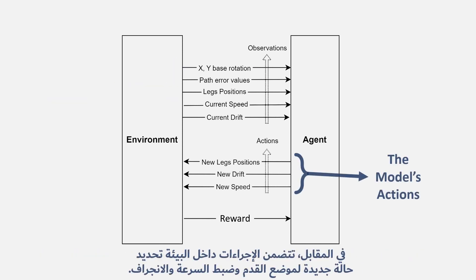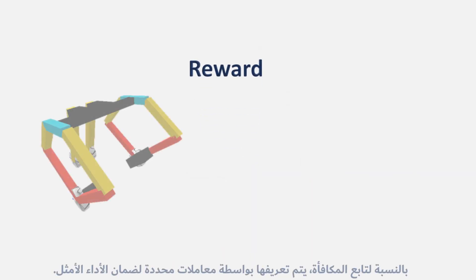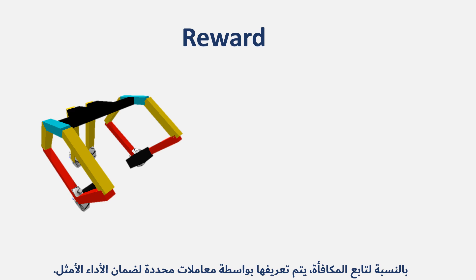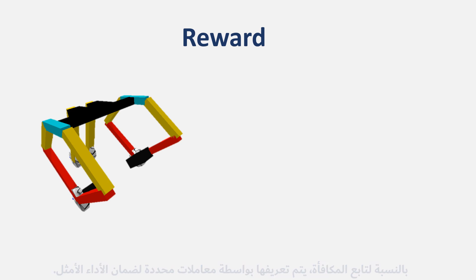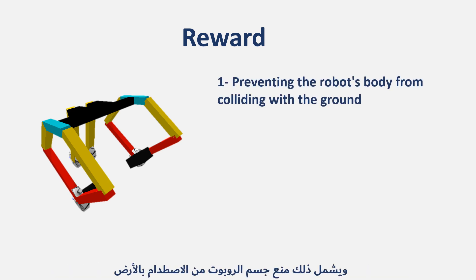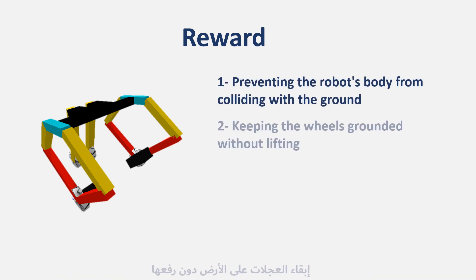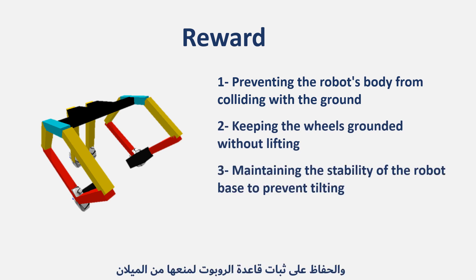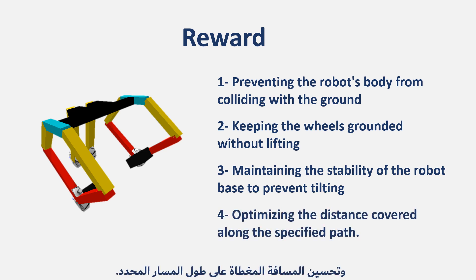Correspondingly, the actions within the environment involve defining a new foot state and adjusting the speed and the drift. For the reward function, it is defined by specific parameters to ensure optimal performance. These include preventing the robot's body from colliding with the ground, keeping the wheels grounded without lifting, maintaining the stability of the robot base to prevent tilting, and optimizing the distance covered along the specified path.